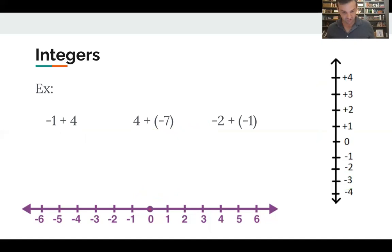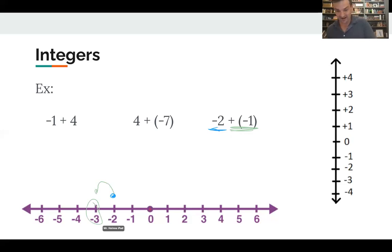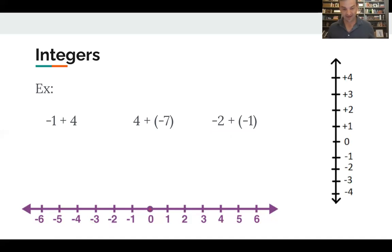For the last number line example: negative two plus negative one. We start at negative two, then add another dollar of debt, going down one more. Our answer is negative three. On the vertical number line, starting at negative two and adding negative one means going down one, and the answer is still negative three. That's how you use the number line to answer integer problems.